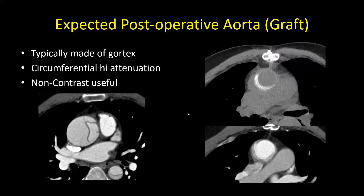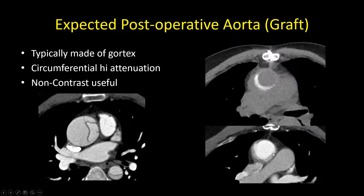Moving on from the pledget, another normal post-operative finding is the graft itself. Typically made of Gore-Tex, it will be circumferential — 360 degrees around the aorta. On non-contrast examinations, don't confuse this for an intramural hematoma. It will be very well demarcated, smooth, and high in attenuation, with interspersed low attenuation from the wrap itself. On the post-contrast study it will look very symmetrical and well demarcated, unlike an intramural hematoma. This is what it looks like in a patient who had a type A aortic dissection repaired — the high attenuation Gore-Tex graft on non-contrast and its appearance on post-contrast.